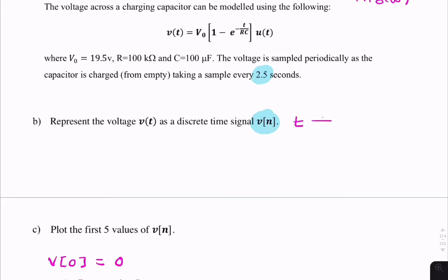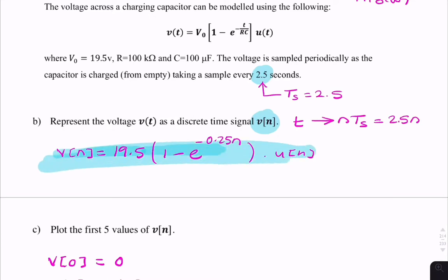We would need to replace T with n times the sampling period, uppercase T. Ts is 2.5, so we just need to replace T with 2.5n. We can write V of n equals 19.5 times 1 minus e to the minus 2.5n divided by 10, which is 0.25n, multiplied by a unit step. That's my final answer for part B.